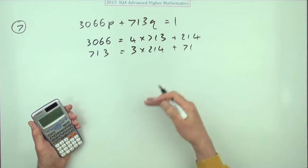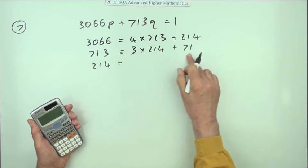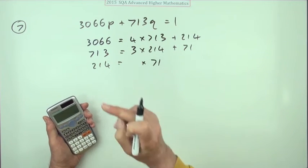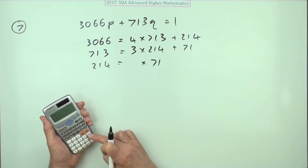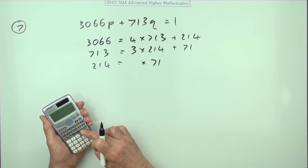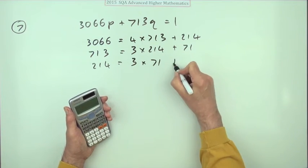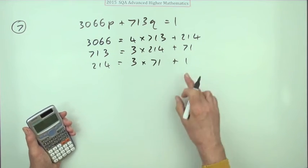I've still not reached it, so we start again. 214 now divided by 71. How many 71s can I get in? 214 divided by 71, press the fraction button again. 3 again, 3 of them with 1 left over. Well that's it. I don't need to go ahead and say how many times does 1 go in, will there be a remainder, because obviously the remainder will be 0.